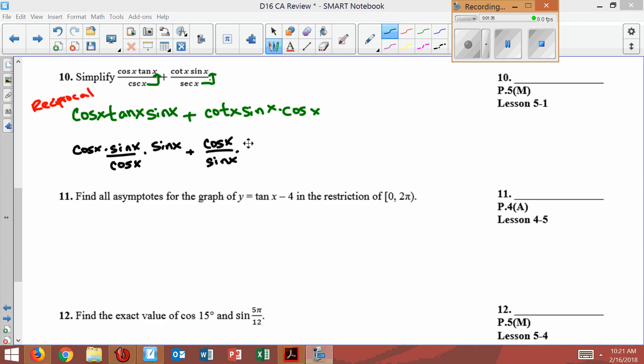Next, we keep the sine there and we also keep the cosine there. And from this step, we call this step right here, changing from tangent to sine over cosine and cotangent to cosine over sine, this step is called the quotient identity.